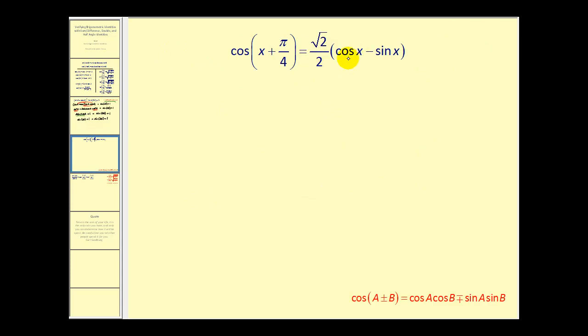Here on the right there's not much we can do with cosine x minus sine x. But notice on the left we have cosine of x plus pi over four. We can expand this using the sum identity for cosine.